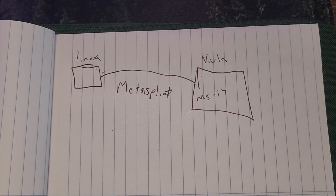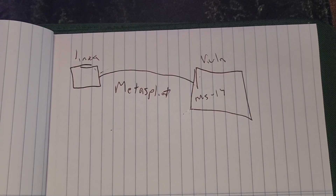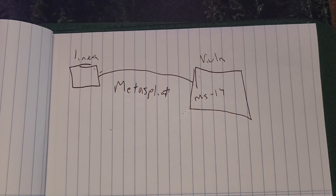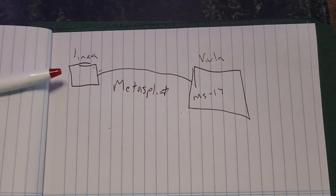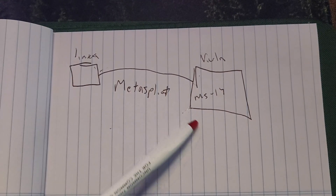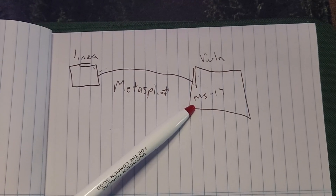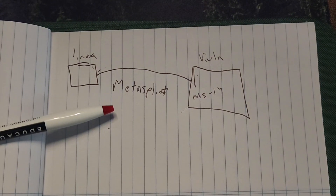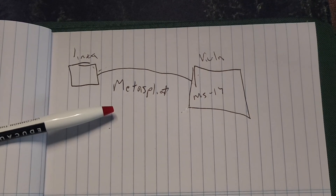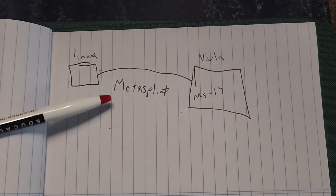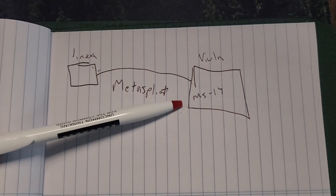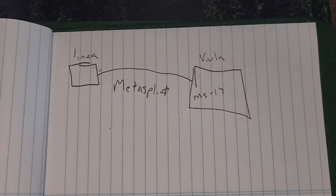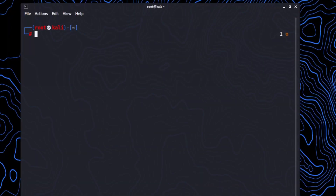I want to give you guys a quick rundown of exactly how this is going to work. This is going to be the Linux machine that we're attacking from, attacking this vulnerable machine here. This machine is going to be vulnerable to something called MS17. What we're going to use in Linux is called Metasploit — a framework used for sending exploits to target devices. Once Metasploit is up and running, we're going to use it to send an attack to this vulnerable machine, which is going to create a backdoor. The first thing we need to do is identify that the target machine is on the network and we're able to talk to it.